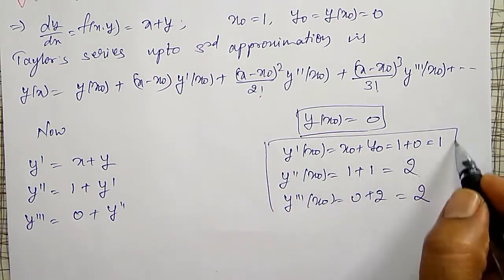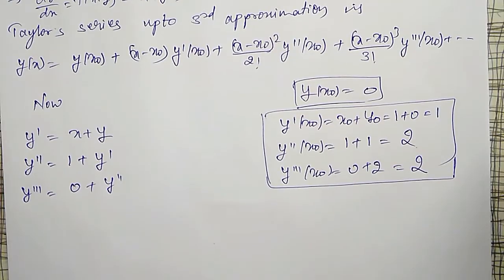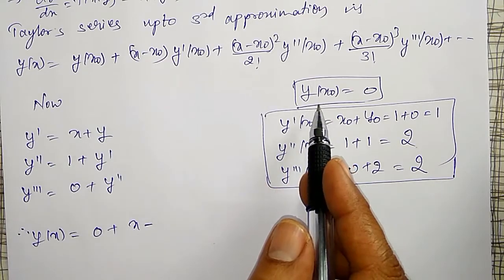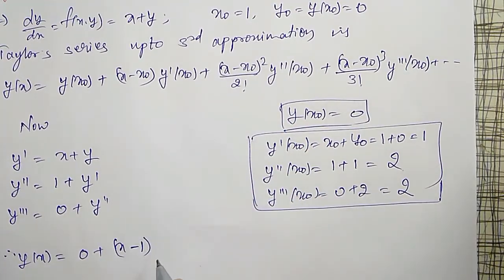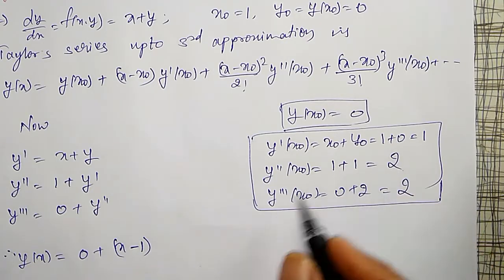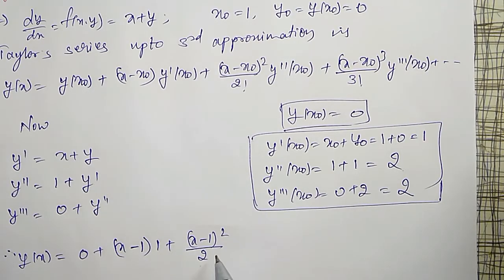Using these three values in a Taylor series, it will become a series solution. Therefore, y(x) = y(x₀) is 0 + (x - x₀), x₀ value is 1, therefore (x - 1) into y'(x₀) is 1, plus (x - 1)²/2 factorial is 2.